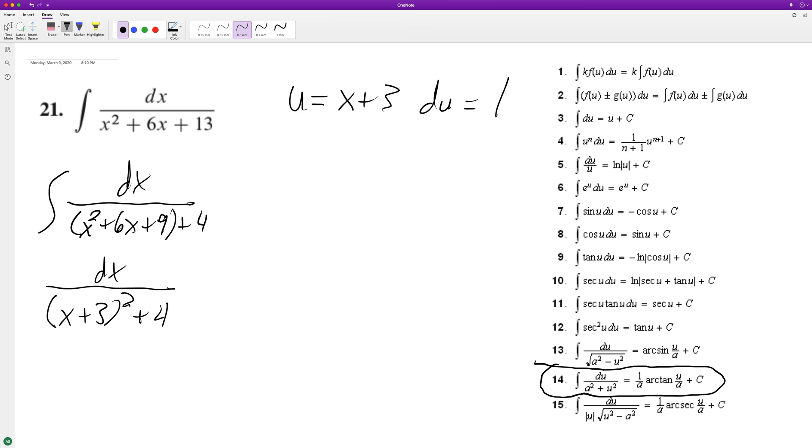This is going to be just du over - I'll put the 4 first and I'll put plus u squared. So this matches up with 14 there, so it's going to be the arc tangent.